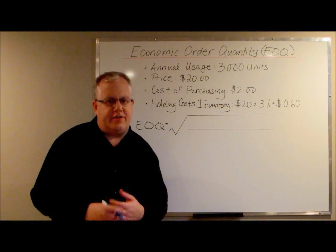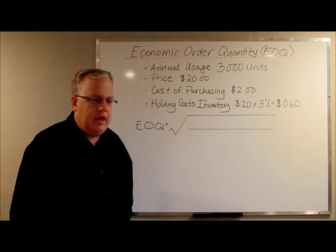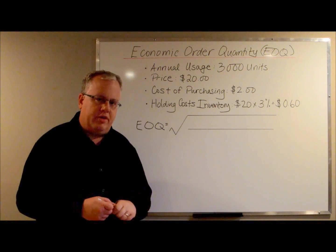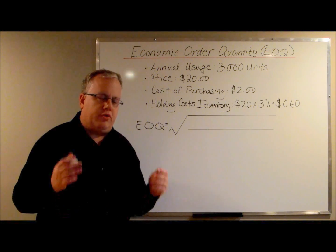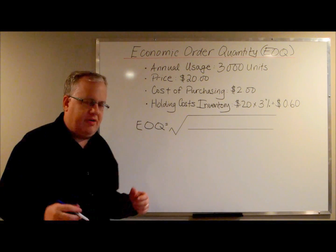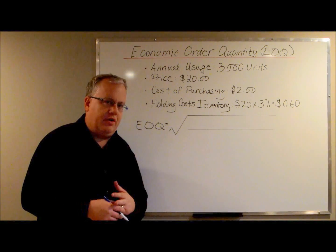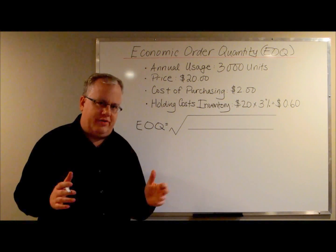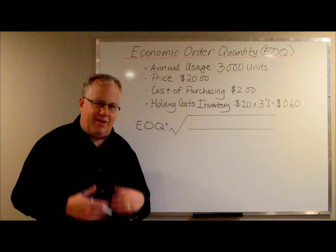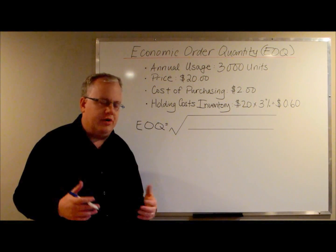Hi guys, Ian Johnson from DriveSuccess.com. Today we're going to talk about calculating economic order quantity using the Wilson EOQ formula. This is a formula that's been around for a hundred years — it actually started in 1913. There are some pros and cons to this formula, but it's important to note that a lot of things have changed in terms of business over the last hundred years.